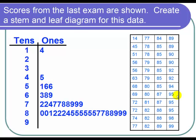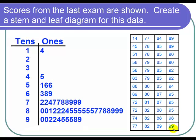And then finally for our 90s we have 90 which is a 0, 0, 2, 2, 4, 5, 5, 5, 8, and 9. So I place 0, 0, 2, 2, 4, 5, 5, 5, 8, and 9 next to the 9 in the tens digit.